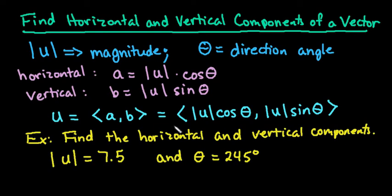So when you are finding the horizontal and vertical components of a vector, you are going to be given the magnitude, which is the length of the vector, and theta, which is the direction angle of the vector. So it'll basically tell you which quadrant you are in.